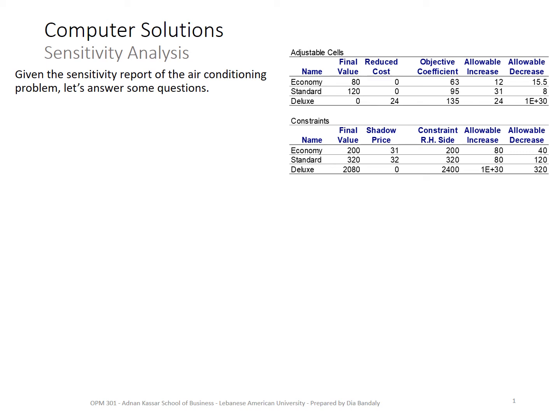This will be our last exercise, so this is good news if you're getting tired. This is referring to our air conditioning problem, and you can see on the right-hand side the sensitivity report tables that I used to explain the different elements of the sensitivity report. Let's see how we use that to answer questions about the solution.